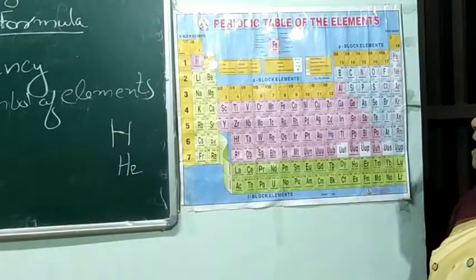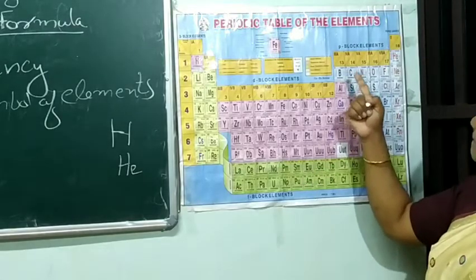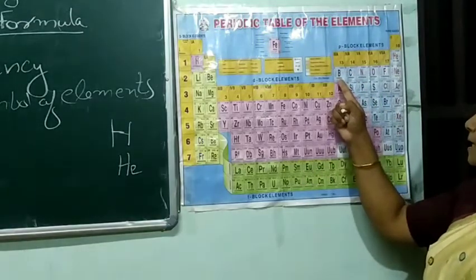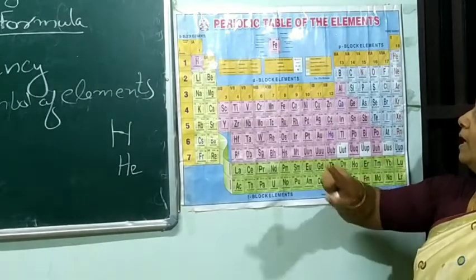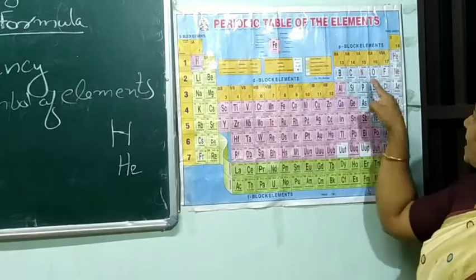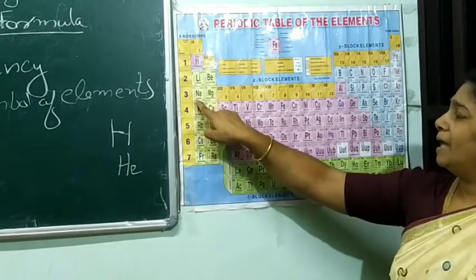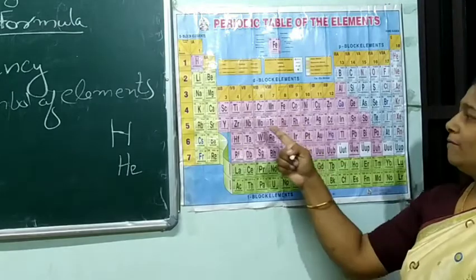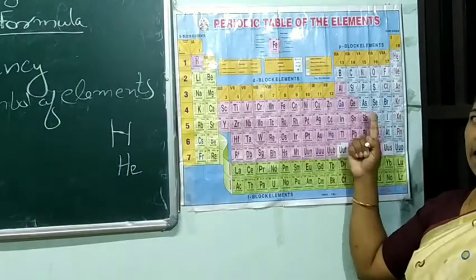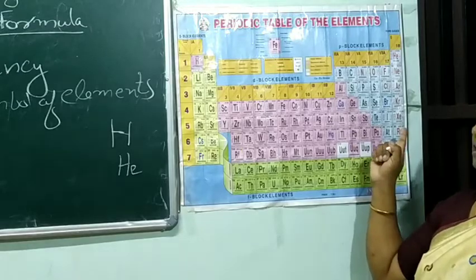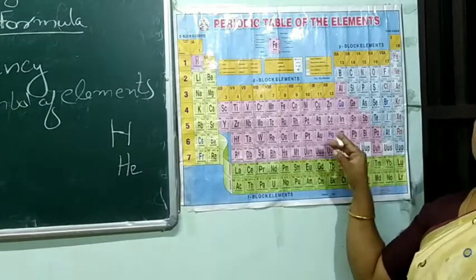Another one is boron — capital letter B. Beryllium comes B, E. In the same way, nitrogen — capital N. Sodium — Na. While we go through the periodic table, some elements have names from English letters itself, and some elements got their names from their Latin word.